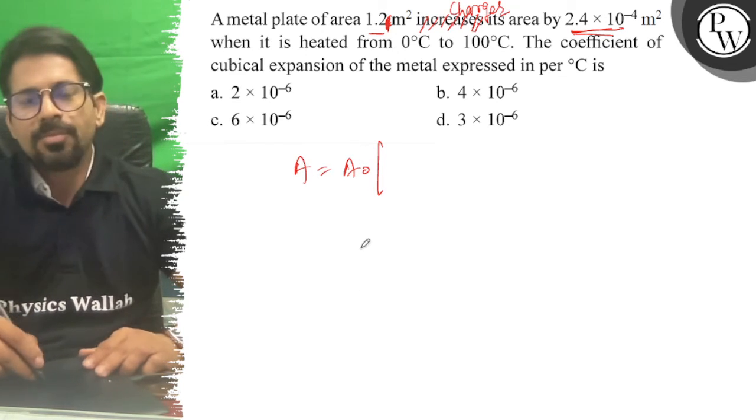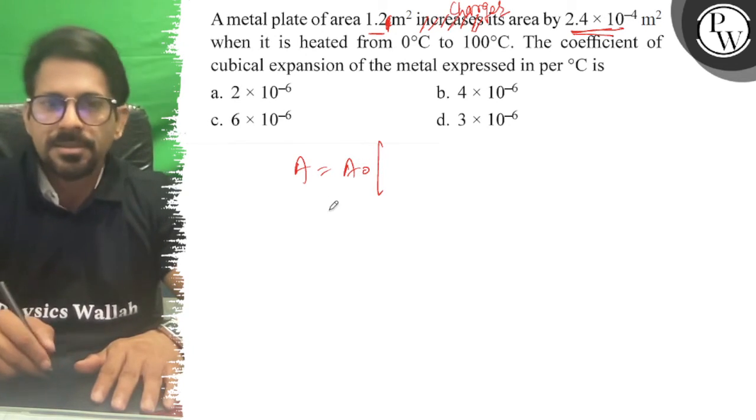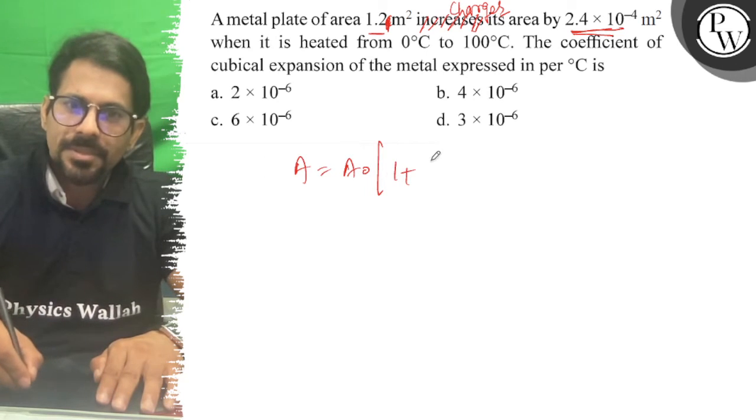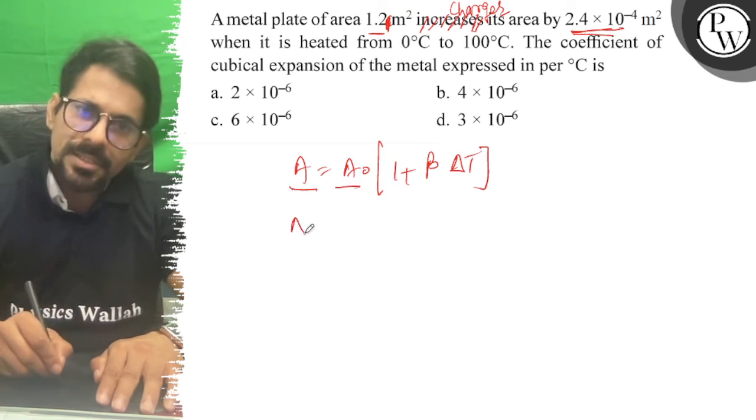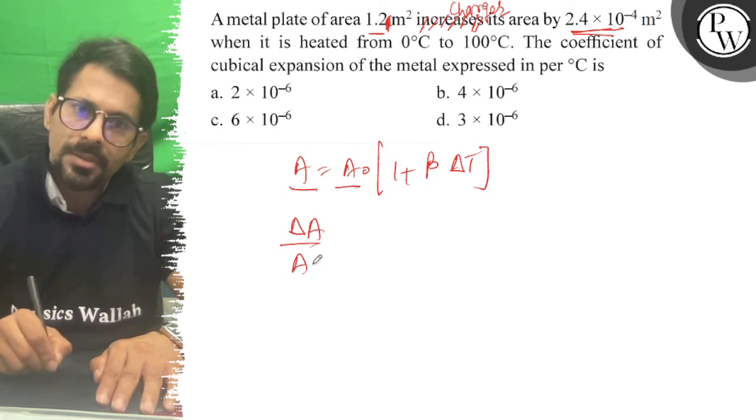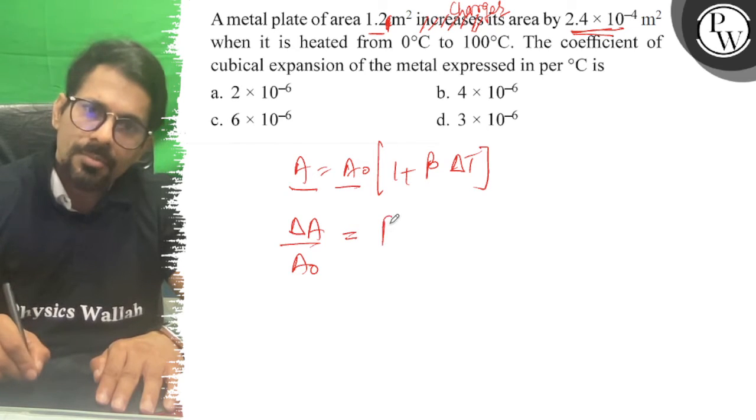It changes its area by 2.4×10⁻⁴. So A equals A₀(1 + β·ΔT). Therefore, ΔA over A₀ is equal to β times ΔT.